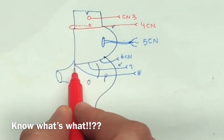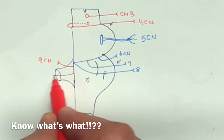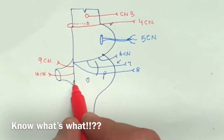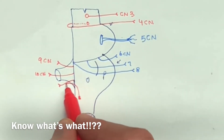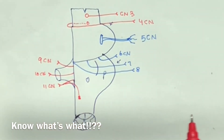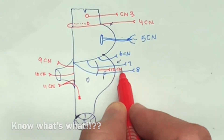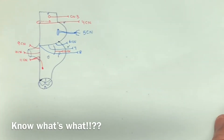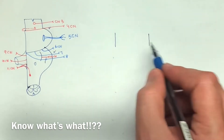Here you have your ninth cranial nerve, the tenth cranial nerve, and the eleventh cranial nerve with its spinal branch — it has two branches, one from the spinal cord and one from the brain stem. And here is your twelfth cranial nerve. That completes the lateral view.